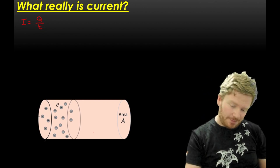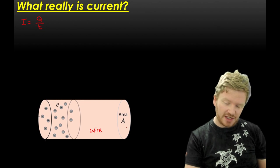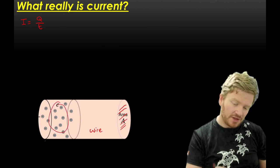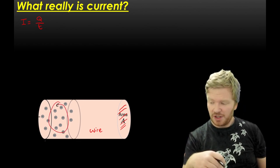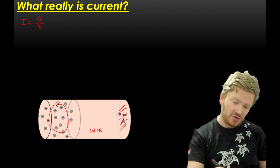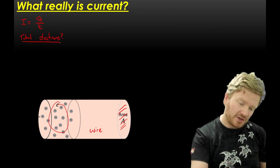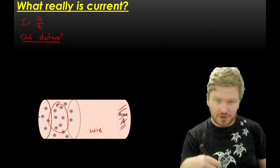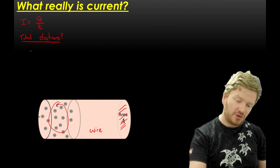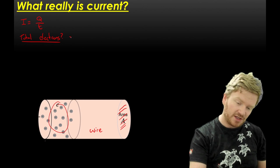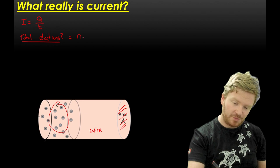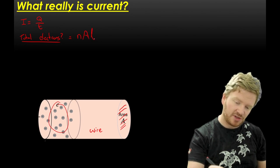Let's think about what actually happens in a wire. I've got a wire here with cross-sectional area A, and within that wire I've got a bunch of electrons. What I want to try and find is what is the total number of electrons in a bit of wire? The total number of electrons is equal to this number N multiplied by cross-sectional area times length.